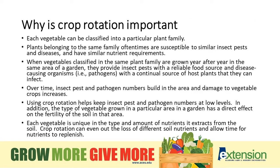So why is it important? Each vegetable can be classified into a particular plant family. Plants belonging to the same family are often susceptible to the same insect pests and diseases, and have similar nutrient requirements. When vegetables classified in the same plant family are grown year after year in the same area of a garden, they provide insect pests with a reliable food source and disease pathogens with a continual source of host plants that they can infect.